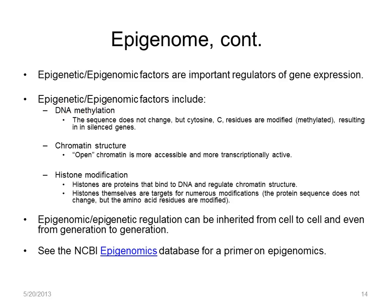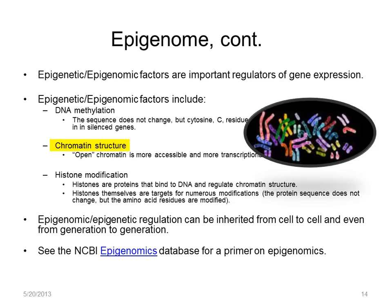Another level of epigenomic regulation is the chromatin structure. Our view of human chromosomes is often of 23 pairs of tightly-coiled chromosomes, but this is only during a stage of cell division where DNA is the most condensed. When genes are active, the DNA is less tightly coiled, and often referred to as open chromatin. One regulator of chromatin structure is the modification of proteins called histones. DNA is wrapped around histones, and similar to methylation of cytosine residues, histone amino acids can be chemically modified in ways that change the protein's interaction with DNA. It is important to note that epigenomic factors can be inherited. If you want to learn more, we have a nice primer on the epigenomics database homepage.